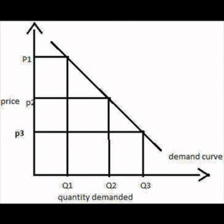In the given example, quantity has been measured along the x-axis and price on the y-axis. When the price is P1, the quantity demanded is Q1; when the price is P2, the quantity demanded is Q2; and when the price is P3, the quantity demanded is Q3. When we join these points, we get a curve that is known as the demand curve.